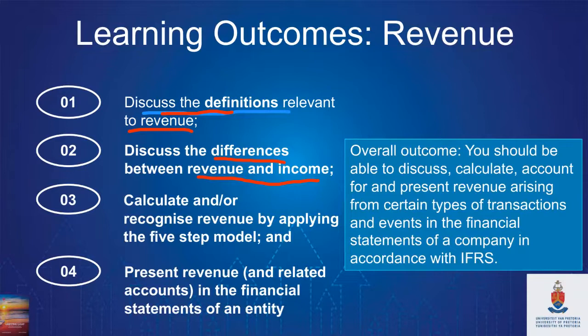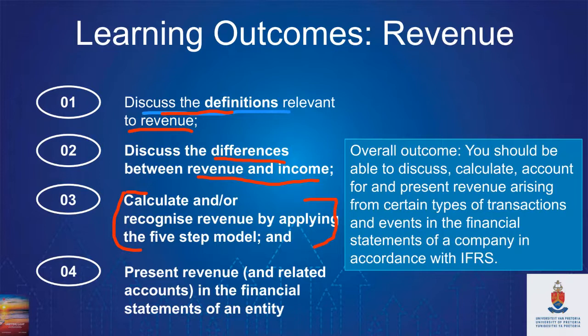We're starting on Outcome Three today but won't finish it — we'll probably complete it next week Thursday, so it will take about a week. That's where the bulk of the work is. The final outcome on presentation is something you'll pick up while doing Outcome Three, so those two outcomes happen at about the same time.